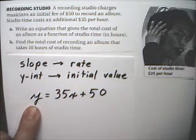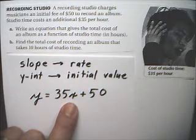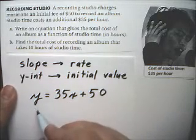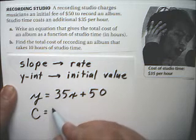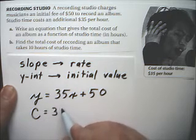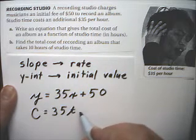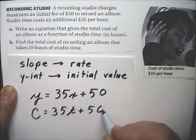This y is going to be the total cost. This x is going to be the time in hours. So cost is equal to 35t plus 50.